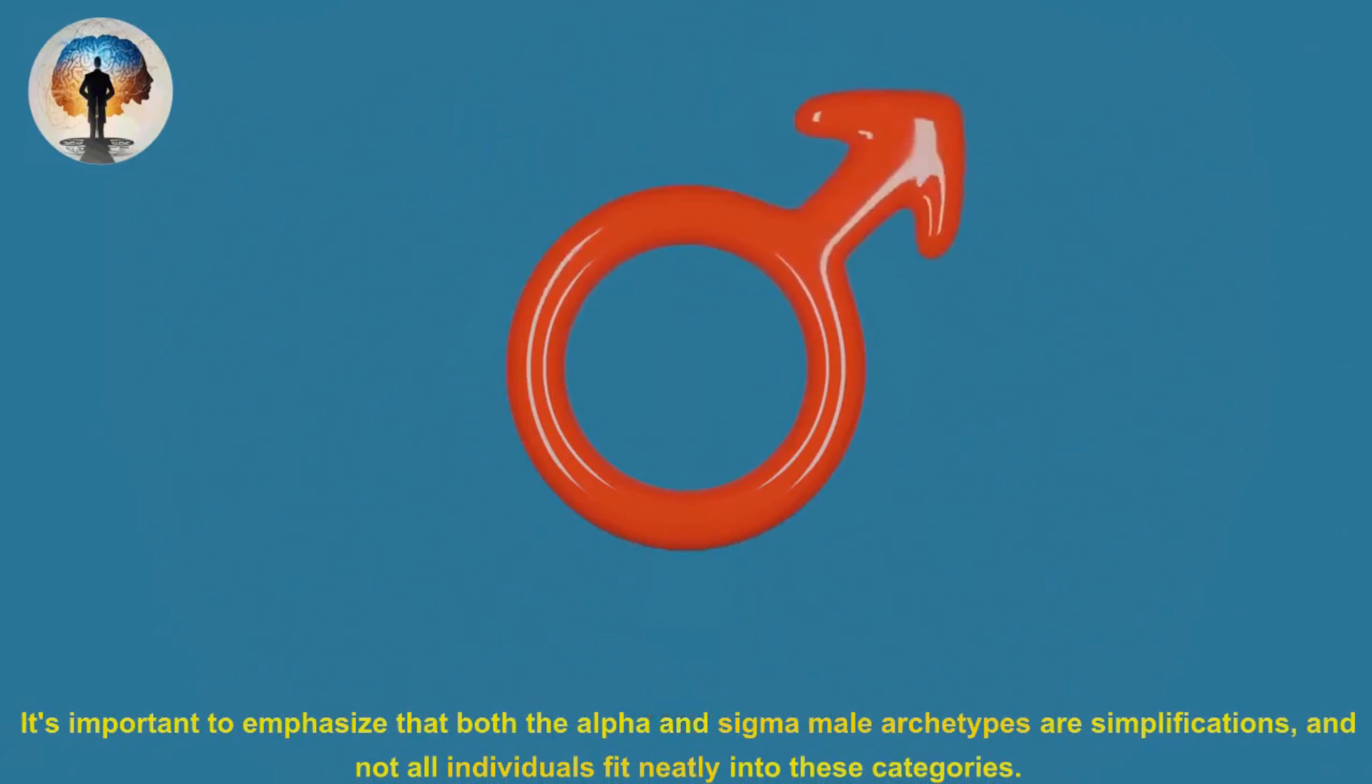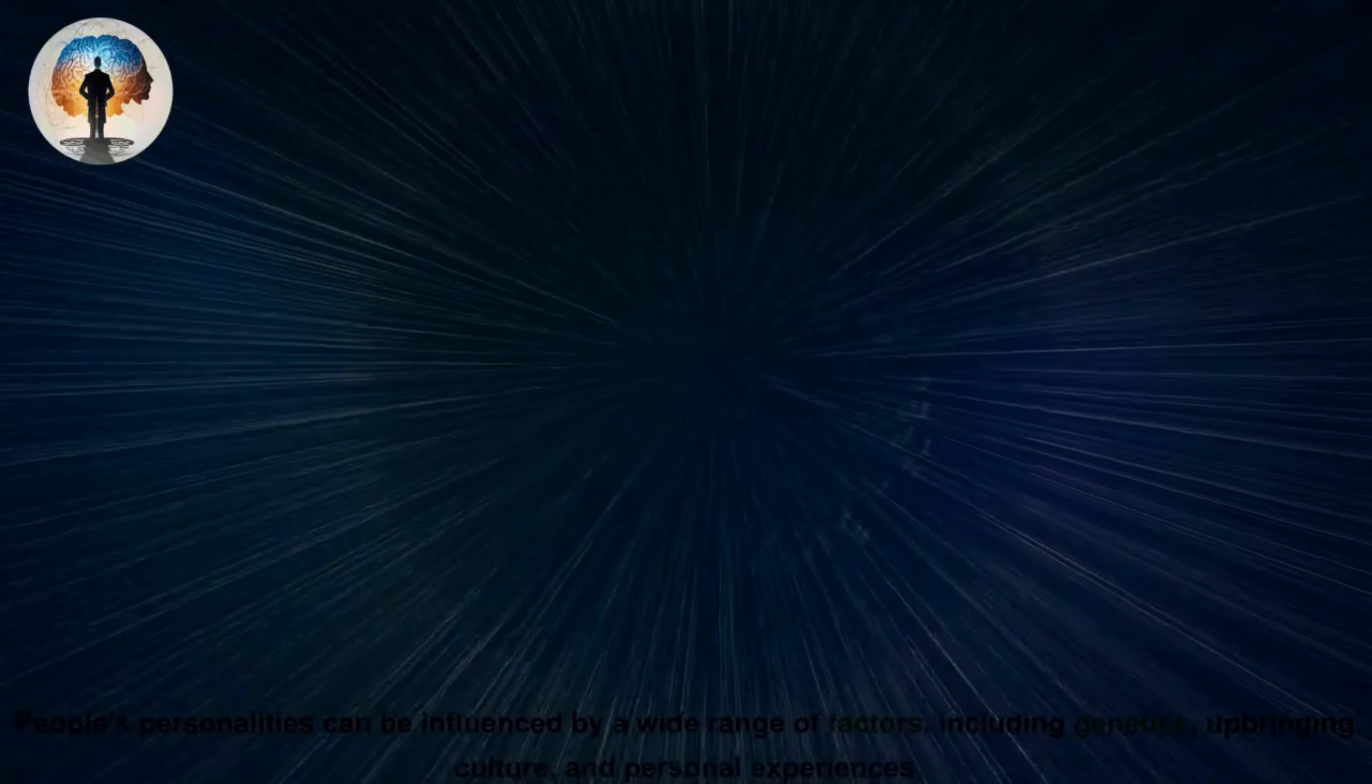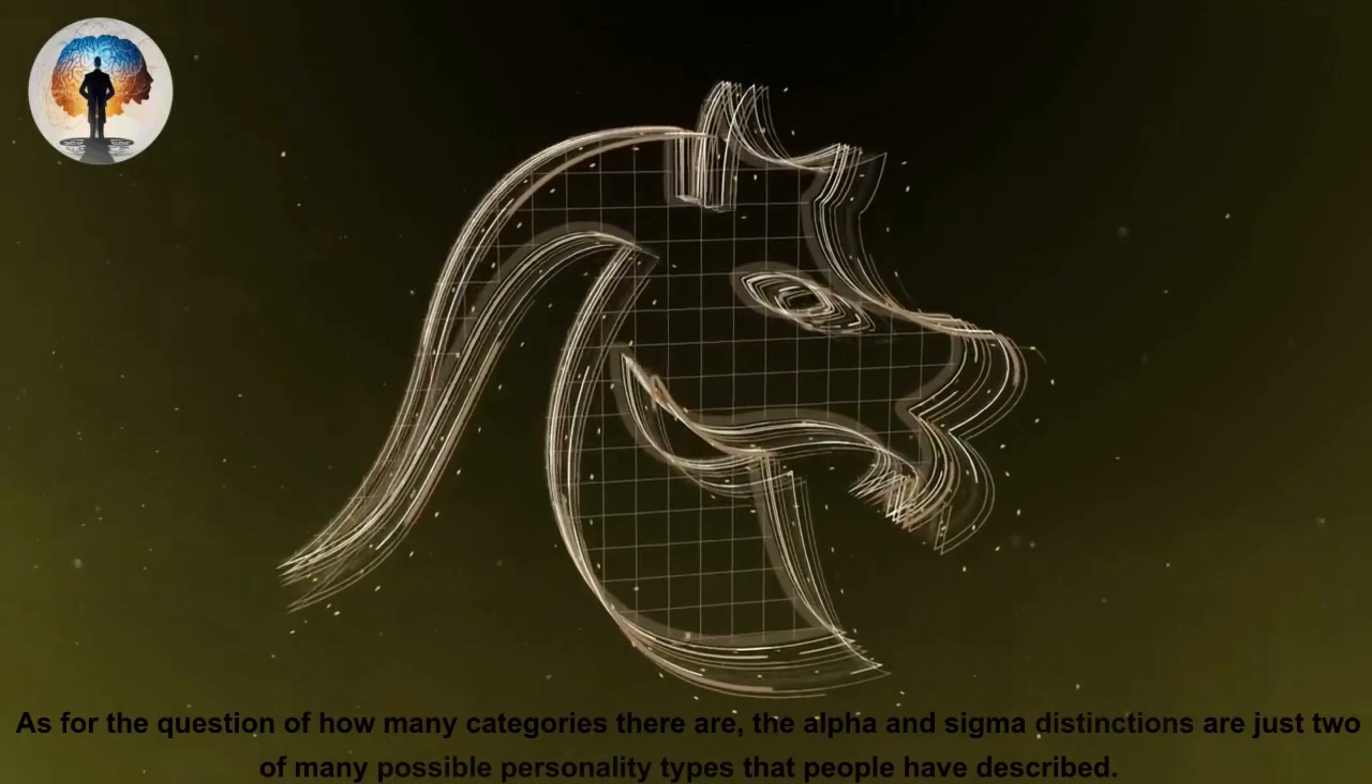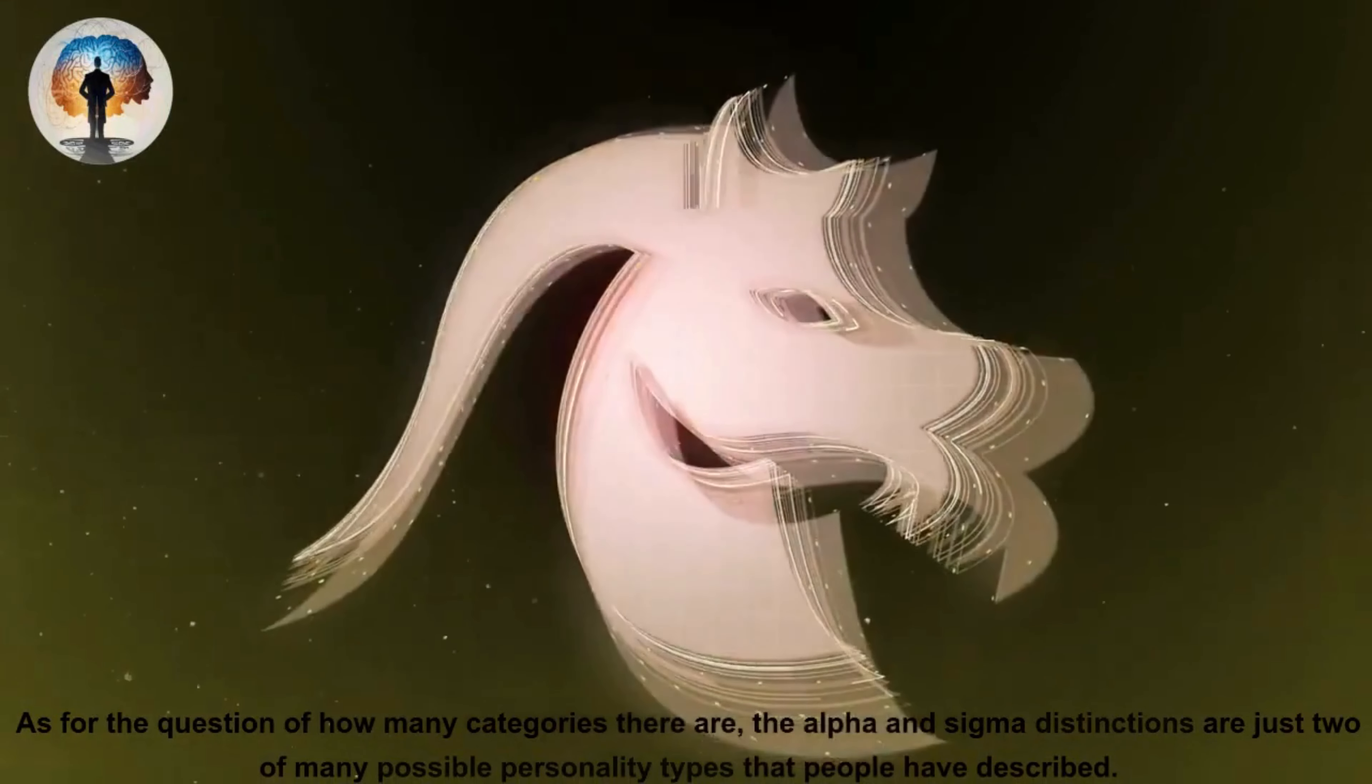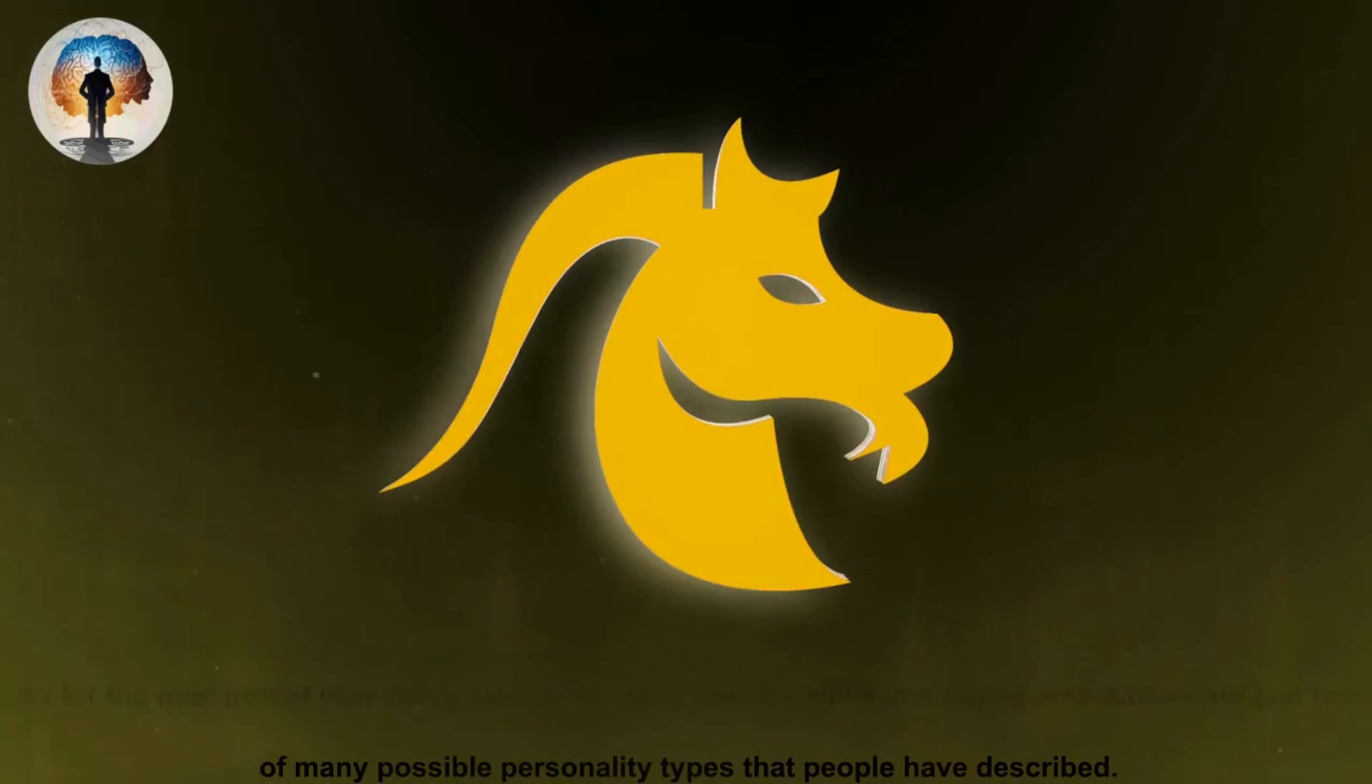It's important to emphasize that both the alpha and sigma male archetypes are simplifications and not all individuals fit neatly into these categories. People's personalities can be influenced by a wide range of factors including genetics, upbringing, culture and personal experiences. As for the question of how many categories there are, the alpha and sigma distinctions are just two of many possible personality types.